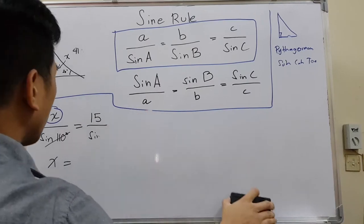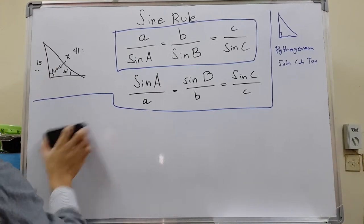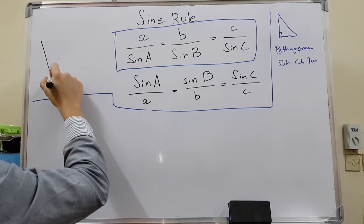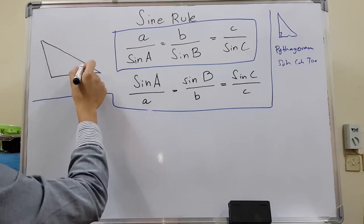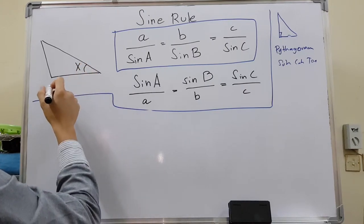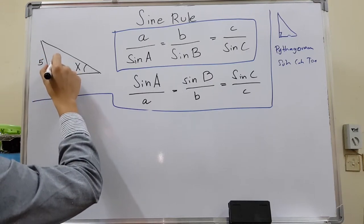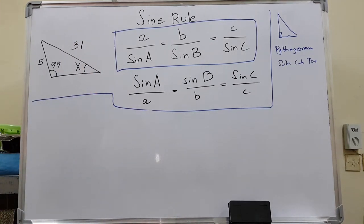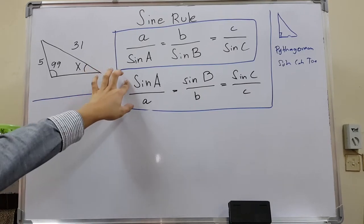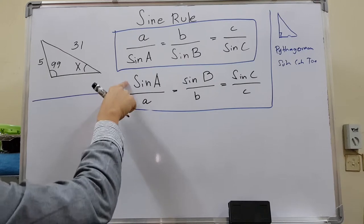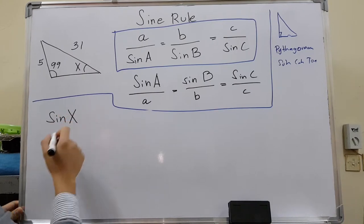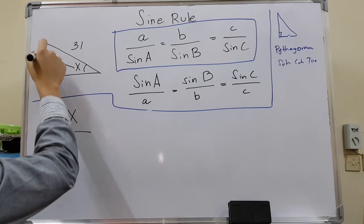Now let's find a missing angle. Let's do another triangle. This angle is X, this side is 5, this angle is 99, and this side is 31. Our missing information is an angle, so I would rather use the second formula because that is easier to solve. Sine the angle: sine X over the side opposite to it, which is 5.